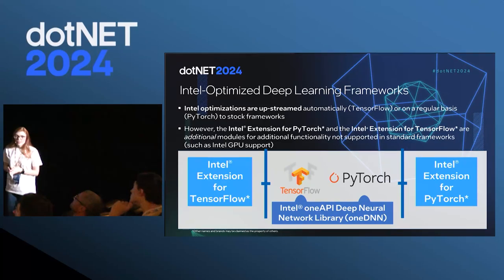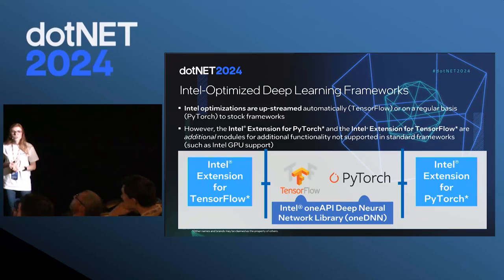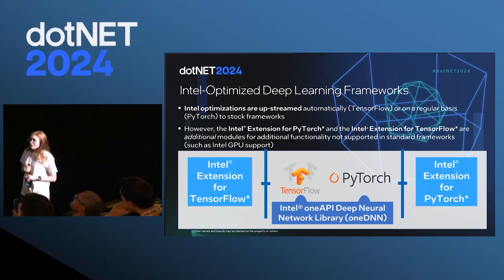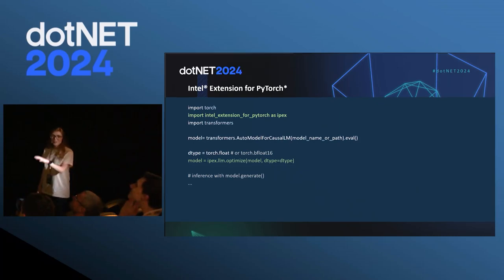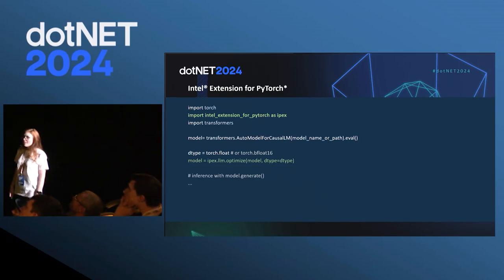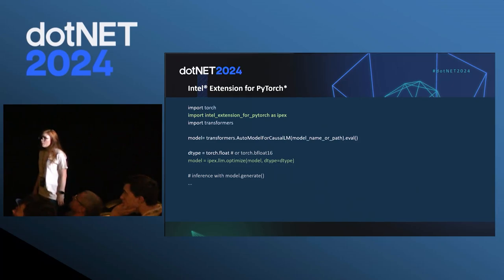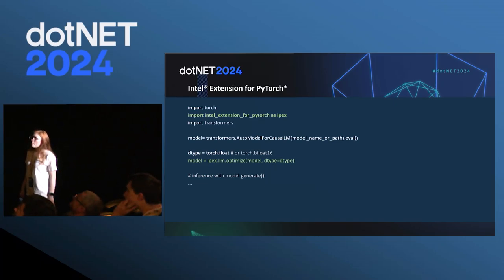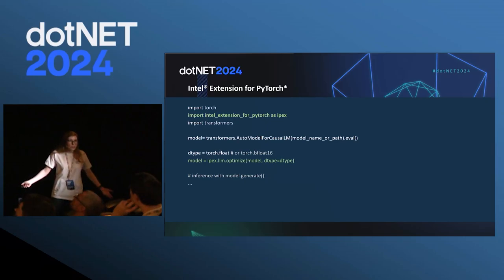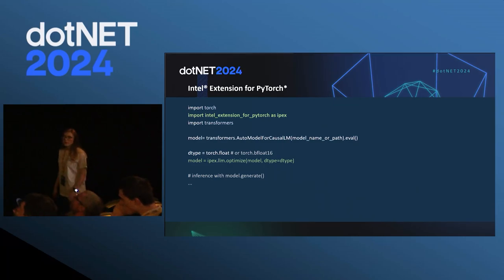In addition to GPU support, you can get some extra CPU improvements. Although OneDNN has been upstreamed, there are still extra improvements you can get. Today I have an example of PyTorch — I just wanted you to see how simple it is to take advantage of some of these optimizations. When we talk about the Intel Extension for PyTorch, you can use it for both CPU and GPU. If you're using large language models, with one line of code you can already optimize it. Most of the popular open-source models are supported — you can find this in the documentation.